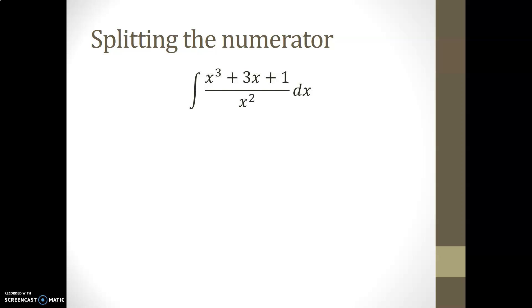Here's an example of a rational function where if all terms are divided by x squared individually, x plus 3 over x plus 1 over x squared are all then individual functions that we can integrate by either using the power rule or recognizing in the case of 3 over x that we have the antiderivative leading to a ln function.